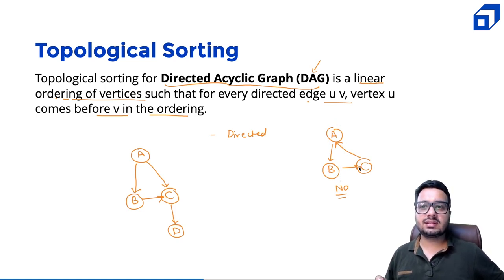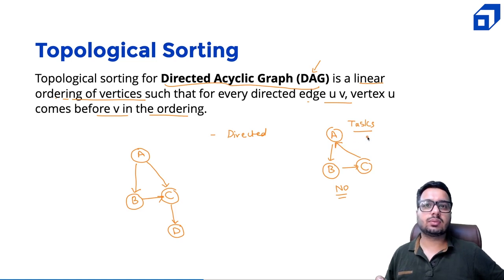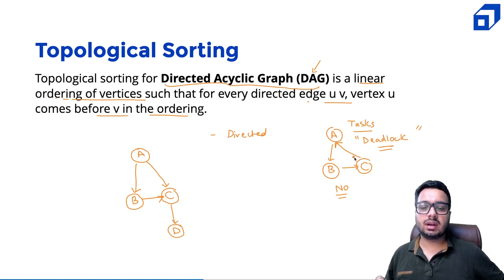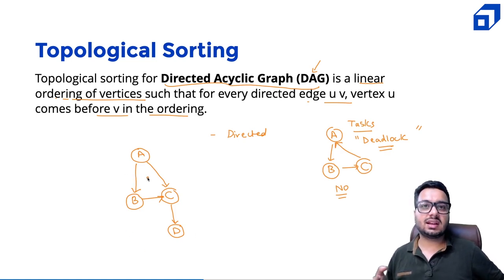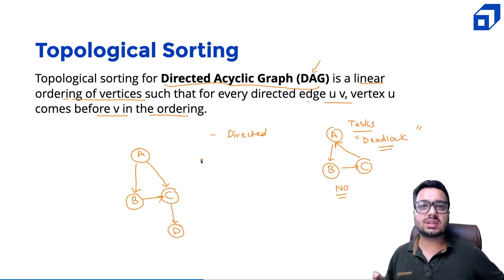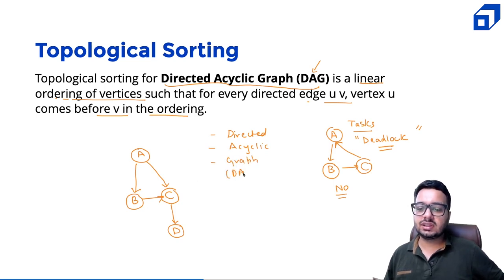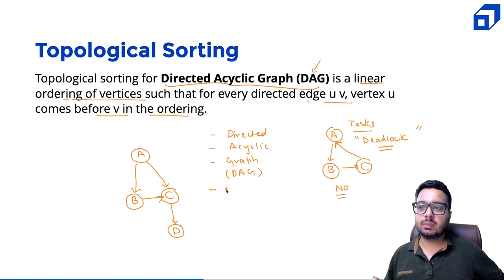Think of a graph as a dependency graph. In the cyclic case, B is dependent on A, C is dependent on B, and A is dependent on C — this creates a complete deadlock. We cannot start any task. But in the directed acyclic graph, there is no cycle and no deadlock. The first graph is an example of a directed acyclic graph; the second is cyclic.